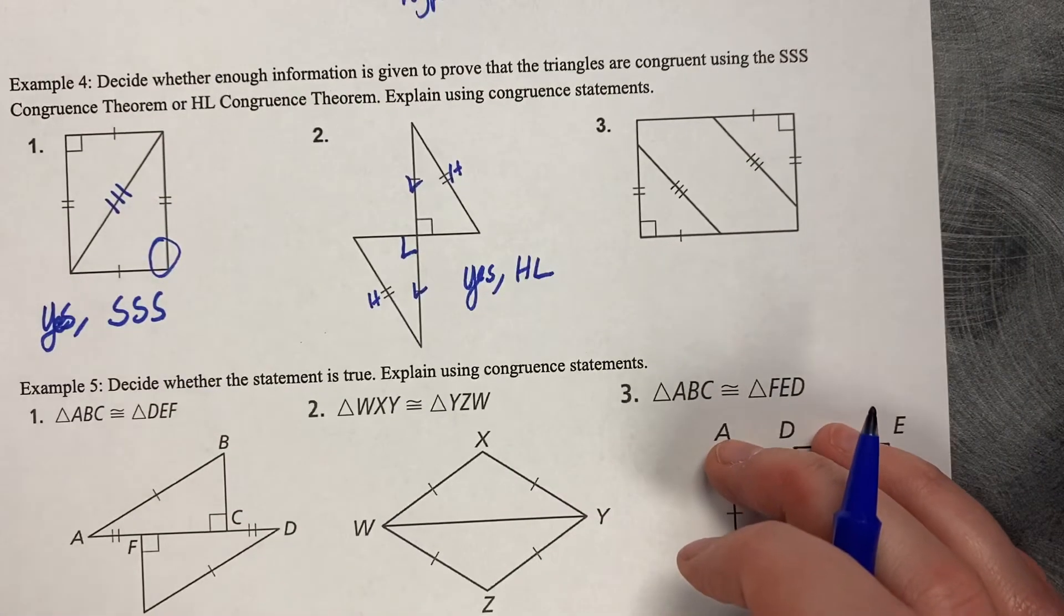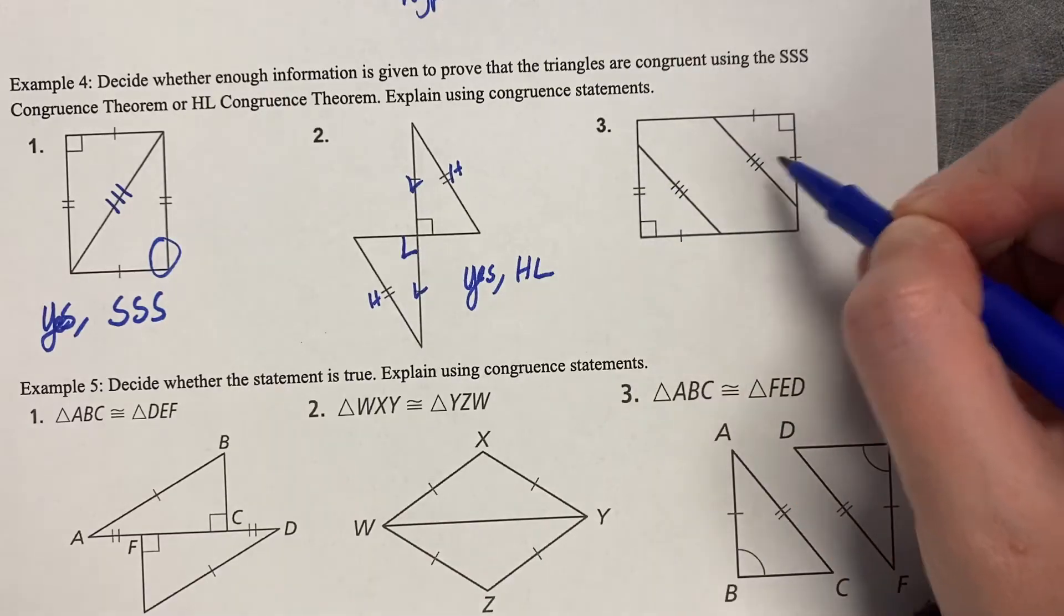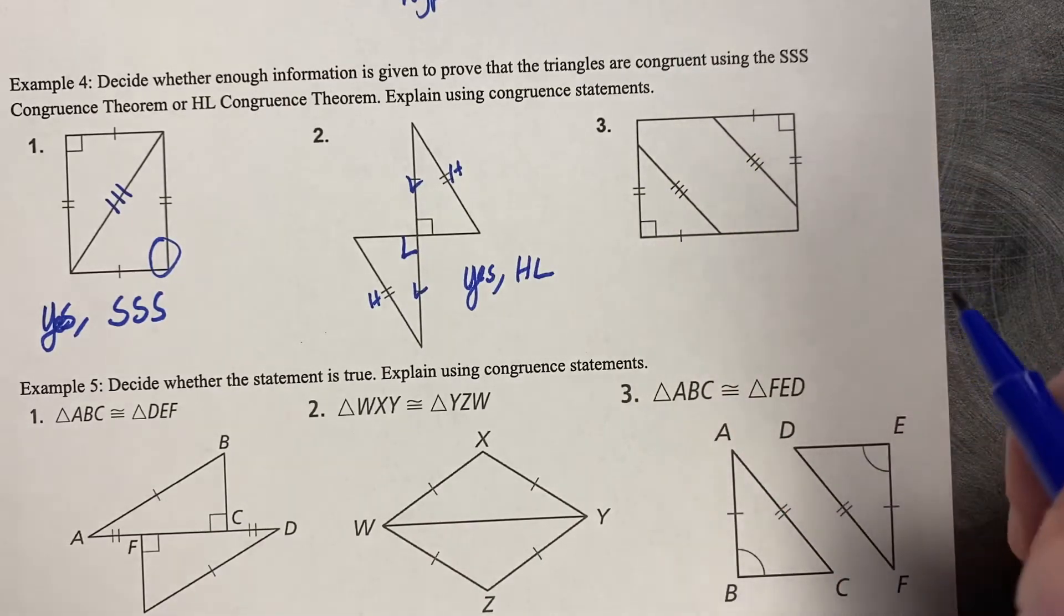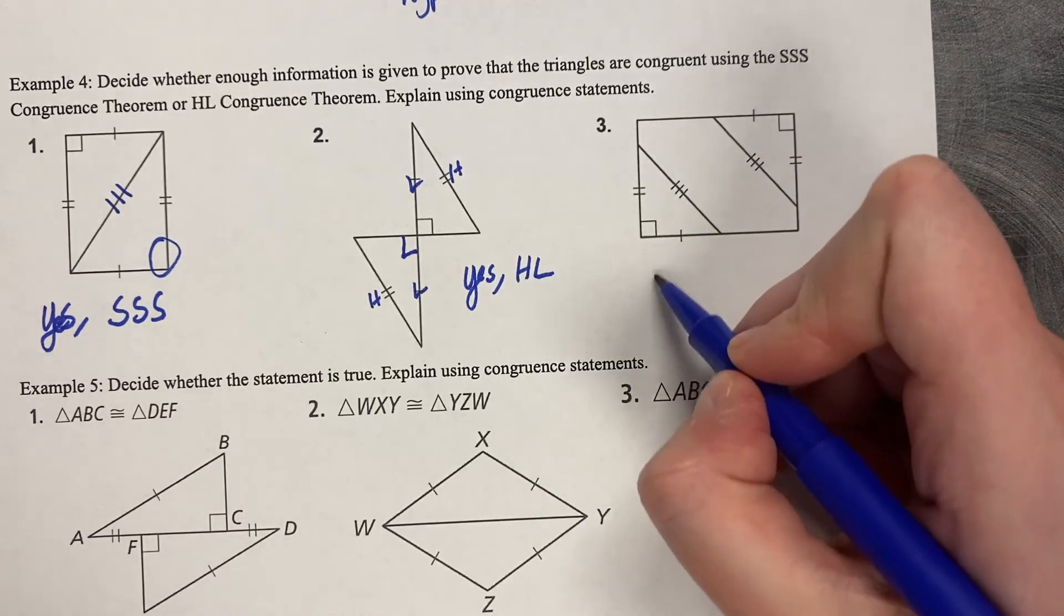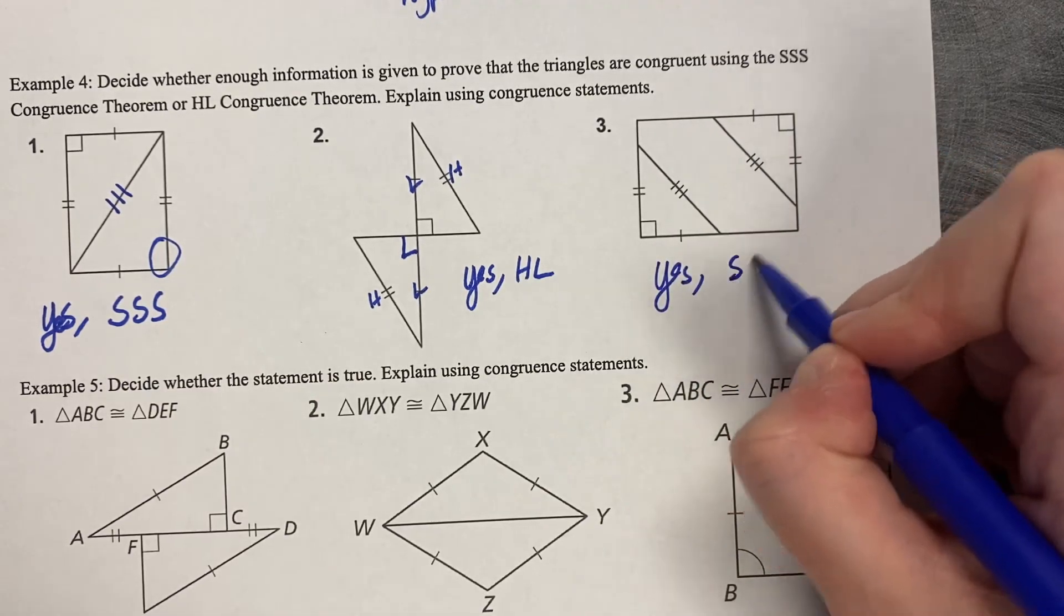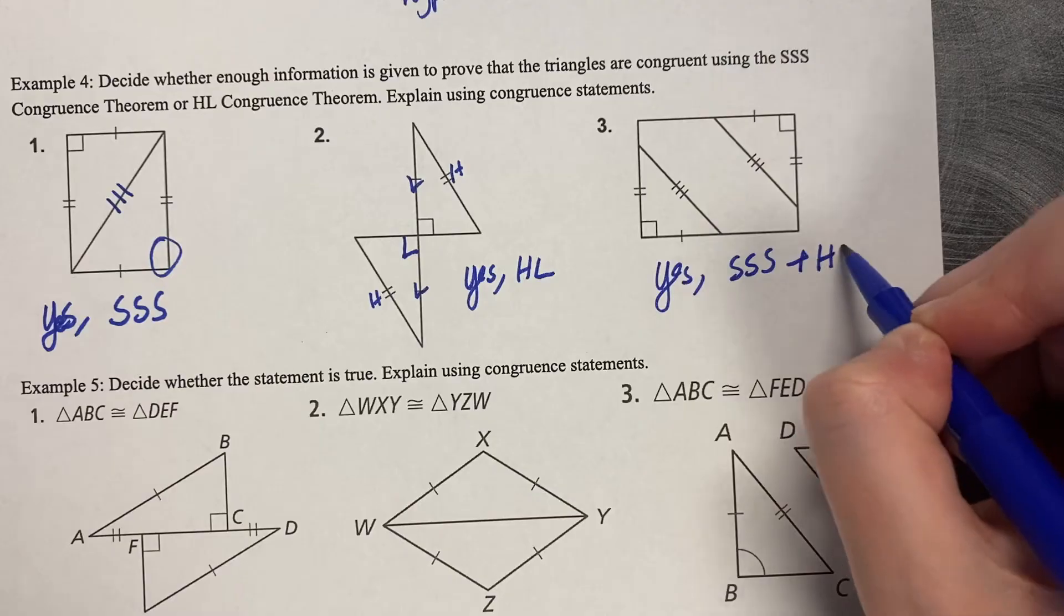Number three: one for one, two for two, three for three, and 90-degree angles. I can see that this is true by both. This is true by side-side-side and HL.